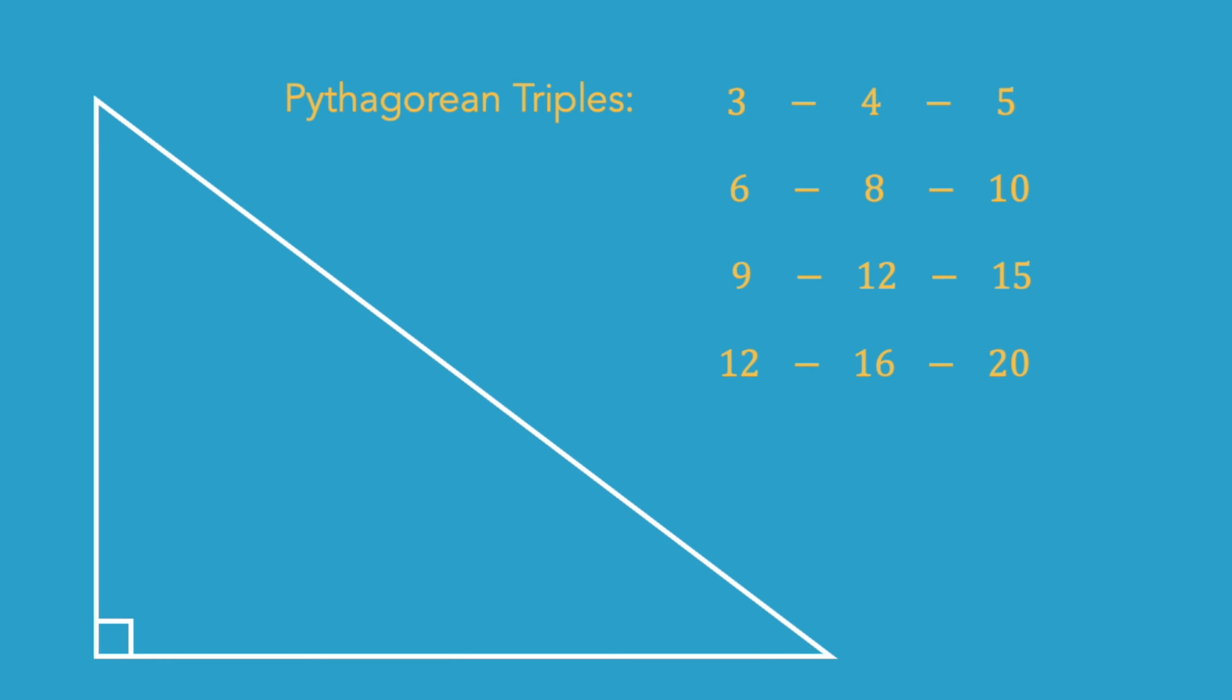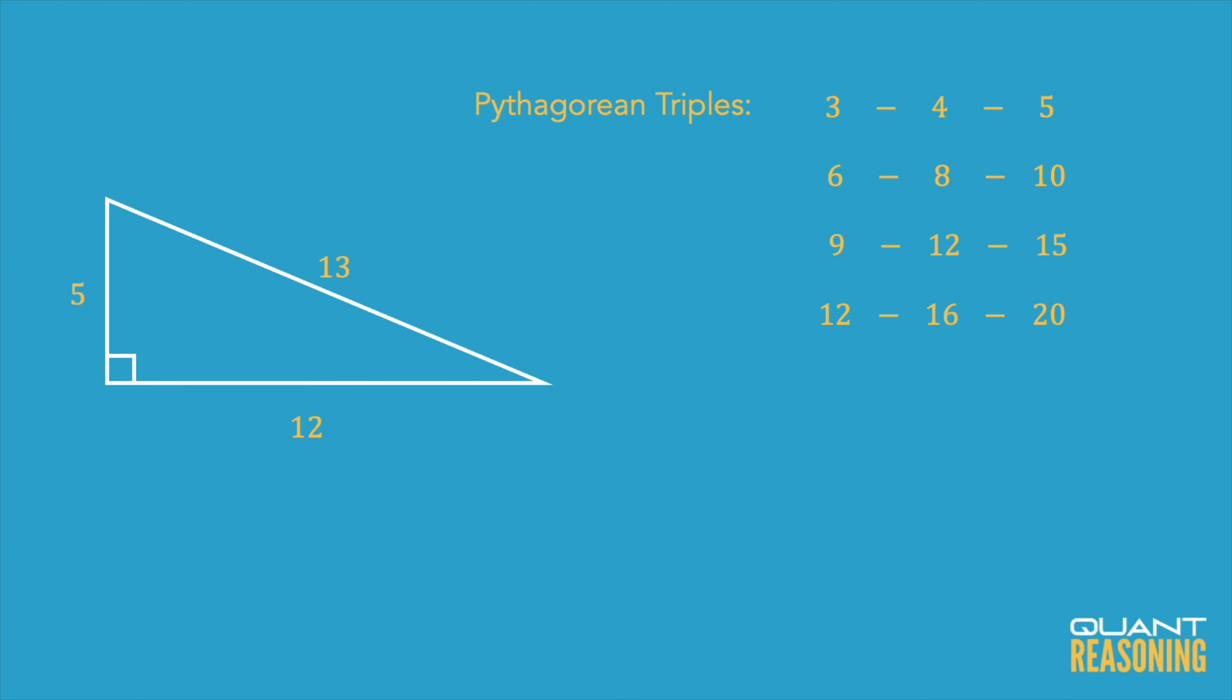Now in the GMAT, you might have, instead of twelve, sixteen, and twenty, maybe they'll give you twelve hundred, sixteen hundred, and two thousand. So you have to recognize that. You have to say, well, if twelve, sixteen, and twenty is a Pythagorean triple, then an expansion by a factor of a hundred is still going to be a Pythagorean triple. Now the other Pythagorean triples that we need to memorize are five, twelve, thirteen, eight, fifteen, seventeen, and seven, twenty-four, twenty-five.